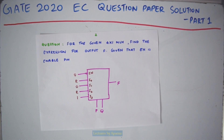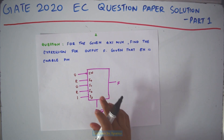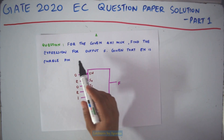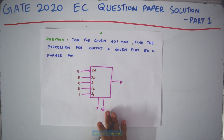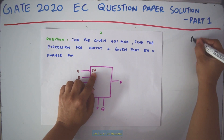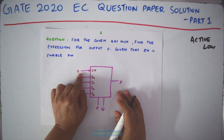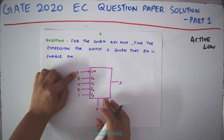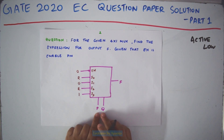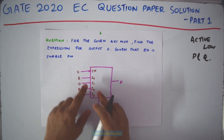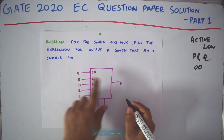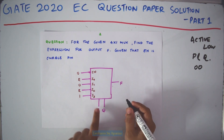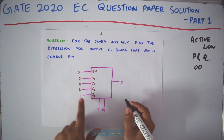The next question is from digital electronics. This is a 4-by-1 multiplexer. For the given 4-by-1 multiplexer, find the expression for output F, given that EN is the enable pin. P and Q are the select lines, and the enable pin is active low. Since a 0 is already connected to the enable pin, the MUX is already enabled. Depending on the values of P and Q, one of the inputs will appear at the output. When PQ is 00, I0 (which is R) comes at the output; when PQ is 01, 0 comes; when PQ is 10, R comes; and when PQ is 11, 1 comes at the output.